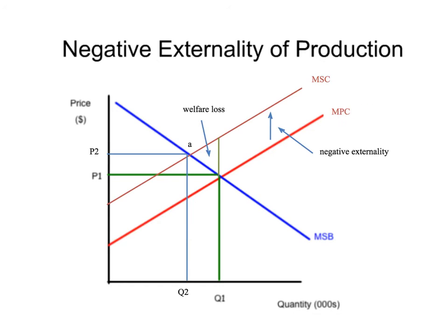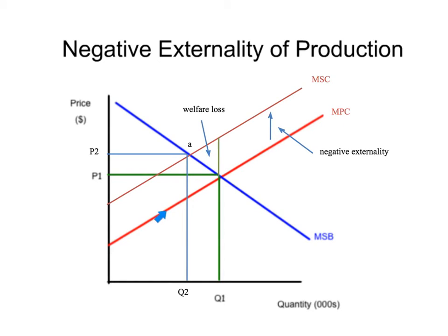But when there's a negative externality of production, that means the marginal private cost is going to be less than the marginal social cost. So the marginal social cost curve is going to be moved upward, away from being on top of the marginal private cost curve. And here's what it would look like. So this marginal social cost curve got moved up. Why? Because there's some sort of negative externality of production — the production of something is damaging third parties. The example is a paint company producing paint and polluting the air, creating a social cost to society greater than what the private firm bears.